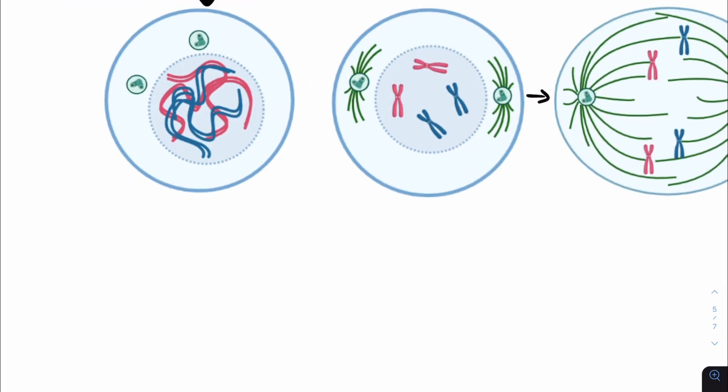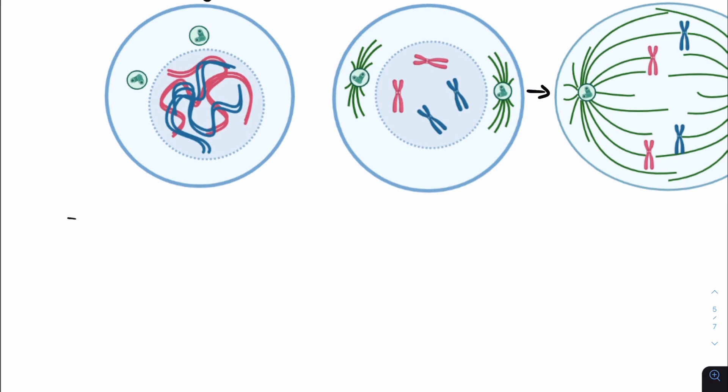Here we can see, during interphase, we have double the genetic material of a normal somatic cell. Furthermore, we can also see that there are two centrosomes. These centrosomes are also replicated during interphase, preparing us for mitosis. Then moving on to the first stage of mitosis. Let's do it.